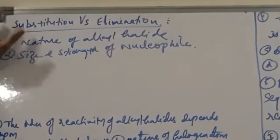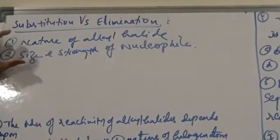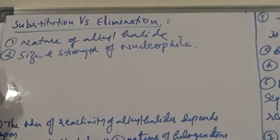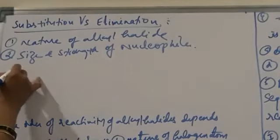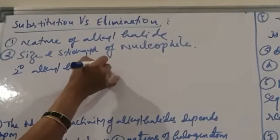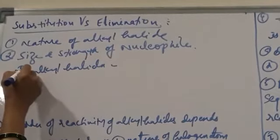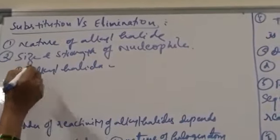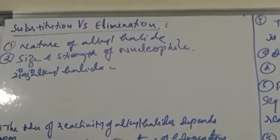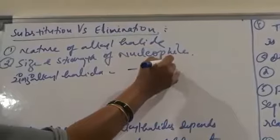Whether substitution or elimination occurs depends upon the nature of the alkyl halide, the size and strength of the nucleophile, and also the reaction conditions. For example, if secondary or tertiary alkyl halides are present, the more favorable reaction is the SN1 reaction.